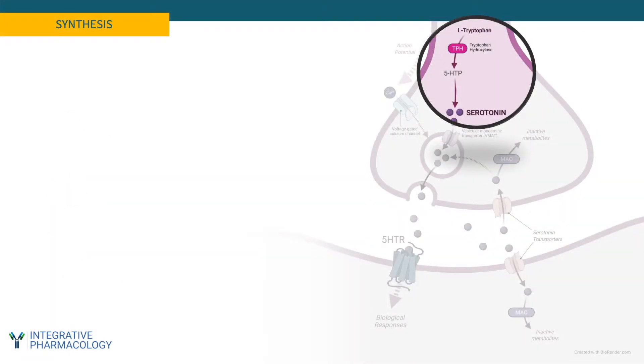Serotonin is made from L-tryptophan, and an enzyme called tryptophan hydroxylase converts tryptophan to 5-HTP, and then 5-HTP is converted to serotonin.